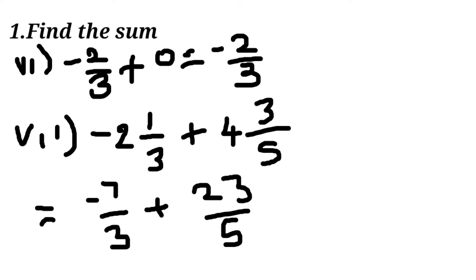Sixth sum: minus 2 by 3 plus 0. Anything plus 0 equals that number, so the answer is minus 2 by 3.